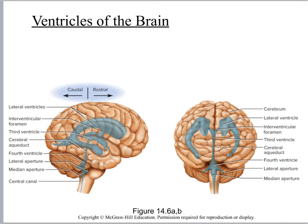Now we need to basically be collecting the cerebral spinal fluid that we're making in the ependymal cells. Remember the CSF is made in ependymal cells, and you're going to find these concentrations of ependymal cells in various places where you're making it. The CSF then gets collected into what are called ventricles and into some other spaces, so you need to look at the two different views here.